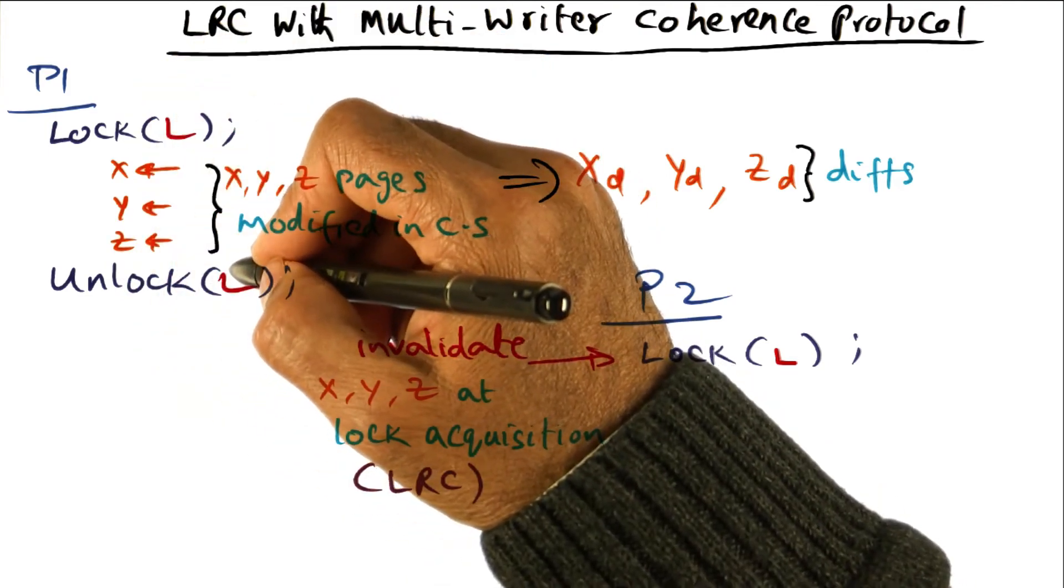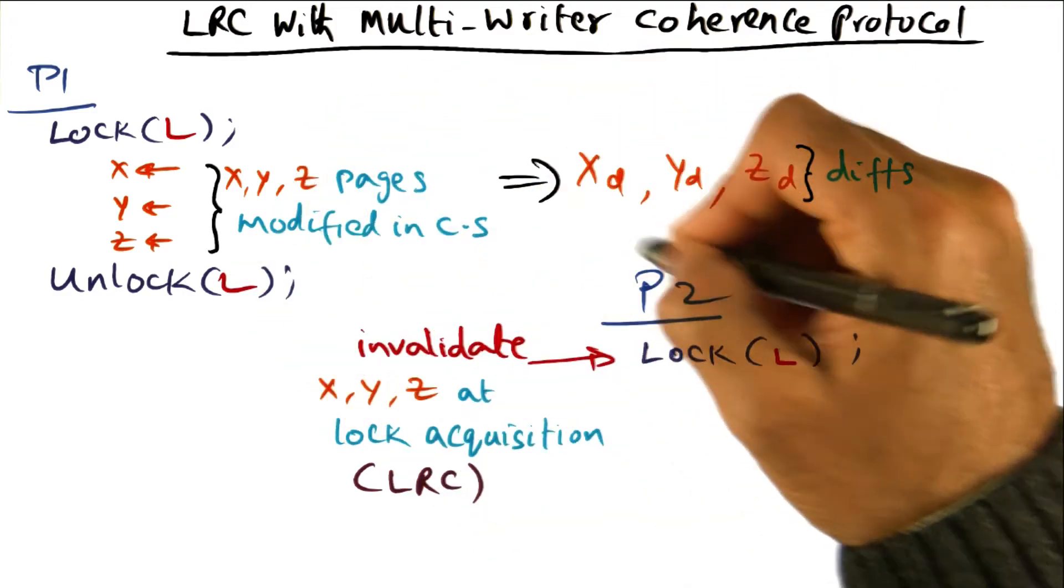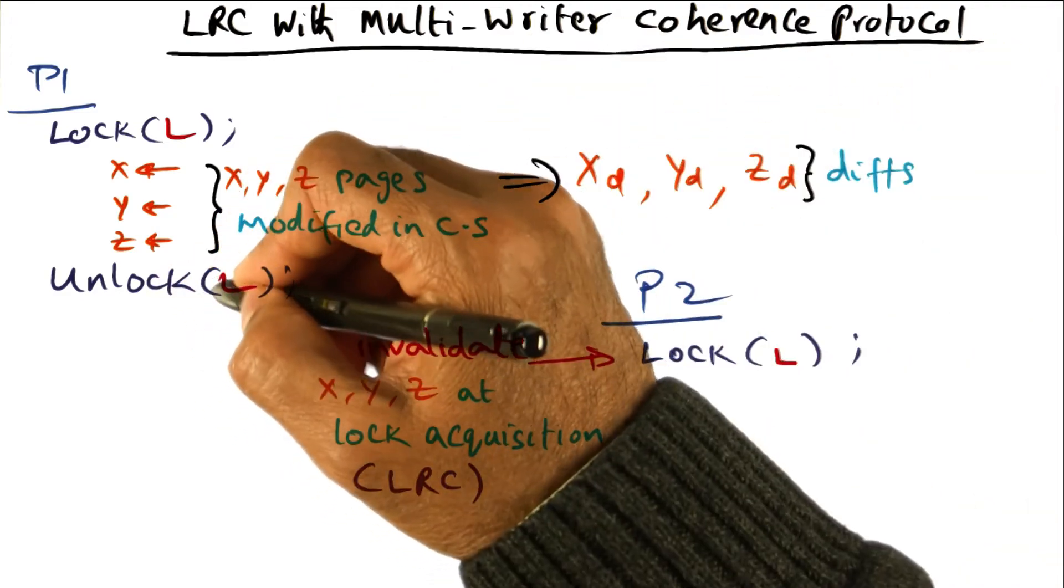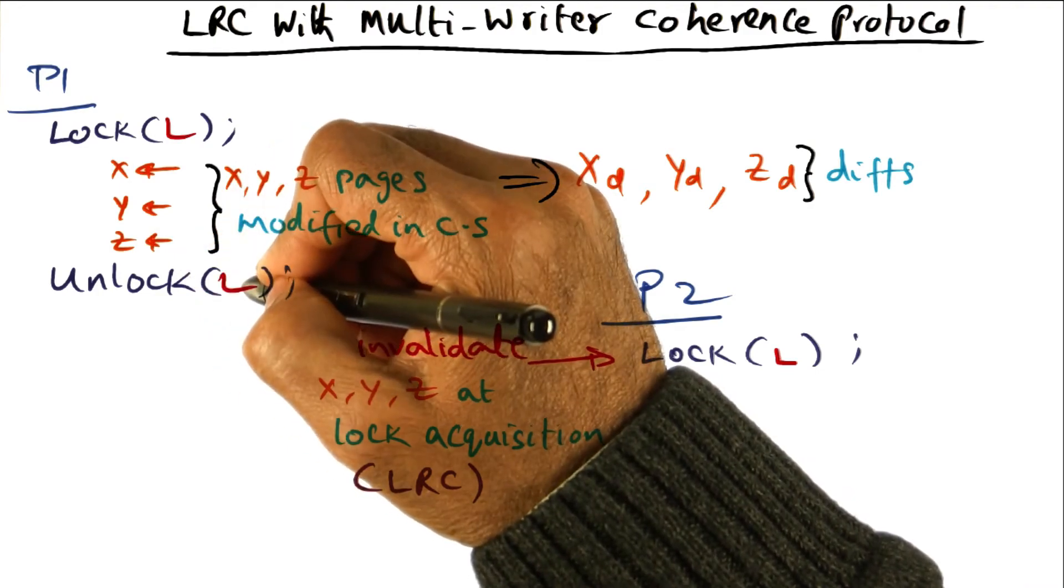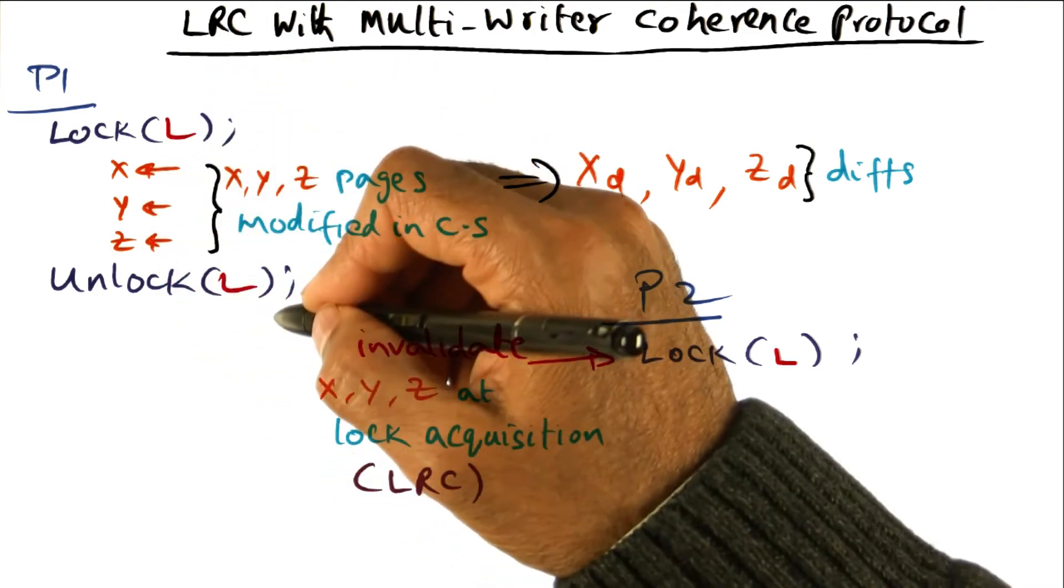This is information that is available to the DSM: at the point of unlock, it knows that these were the pages that were modified by this critical section. It doesn't know what part of the pages were modified—that's contained in the diffs—but it knows that pages X, Y, and Z are associated with this lock L.